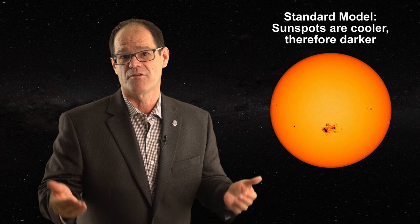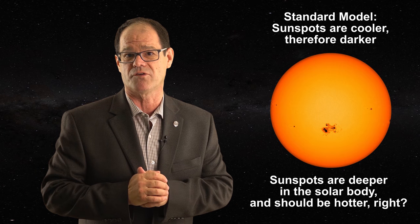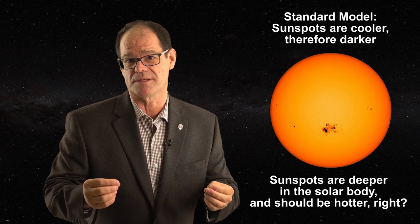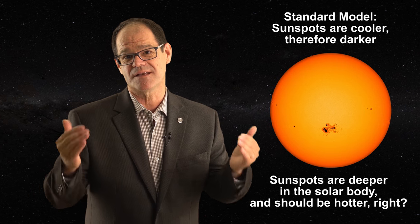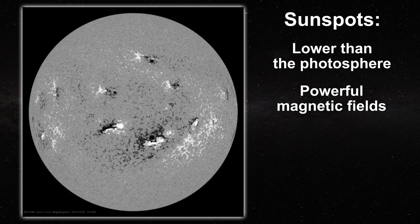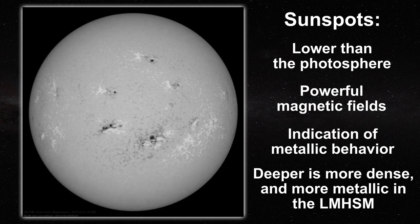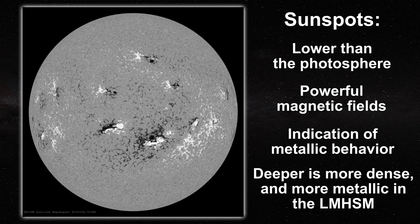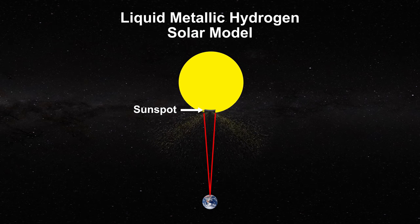Lastly, sunspots. Sunspots appear darker than the photosphere. The standard model claims sunspots are cooler and that is why they are darker. However, we have known since Wilson in the late 1700s that sunspots appear to lie below the level of the photosphere, established by geometrical arguments. If sunspots are deeper, the standard model would predict they should appear warmer, not cooler. In the liquid metallic hydrogen model, sunspots are sites of powerful magnetic fields bursting out of the solar surface. Strong magnetic fields on Earth typically indicate metals. If sunspots are at a lower layer, metallic hydrogen is more compressed and more metallic than at the surface — we would therefore expect a lower normal emissivity. The sunspot appears dark because it is more metallic, not because it is cool.